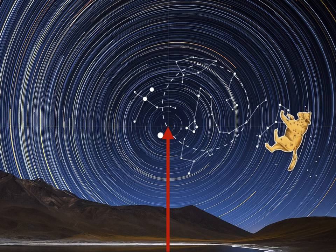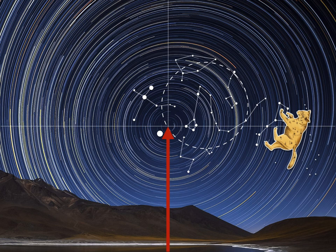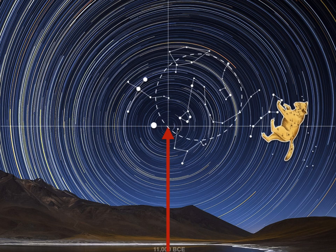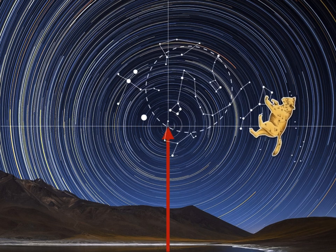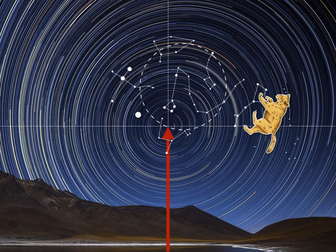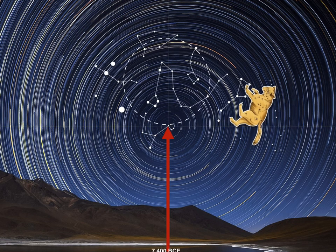And now you see the Vega and you see the pattern of Riksha coming nearer and going further, coming nearer and going further. So this is something very fascinating to understand.